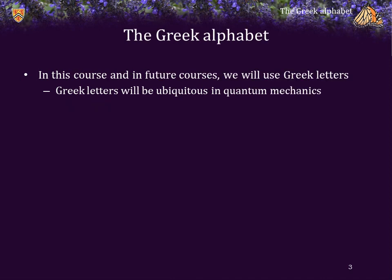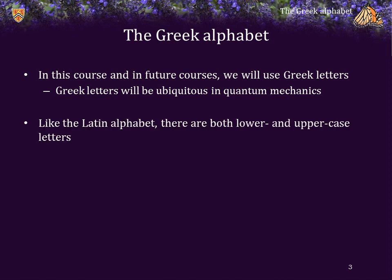In this course and future courses, you will be using Greek letters. For example, Greek letters are more or less ubiquitous within quantum mechanics. Like the Latin alphabet, Greek letters have both lower and uppercase representations.